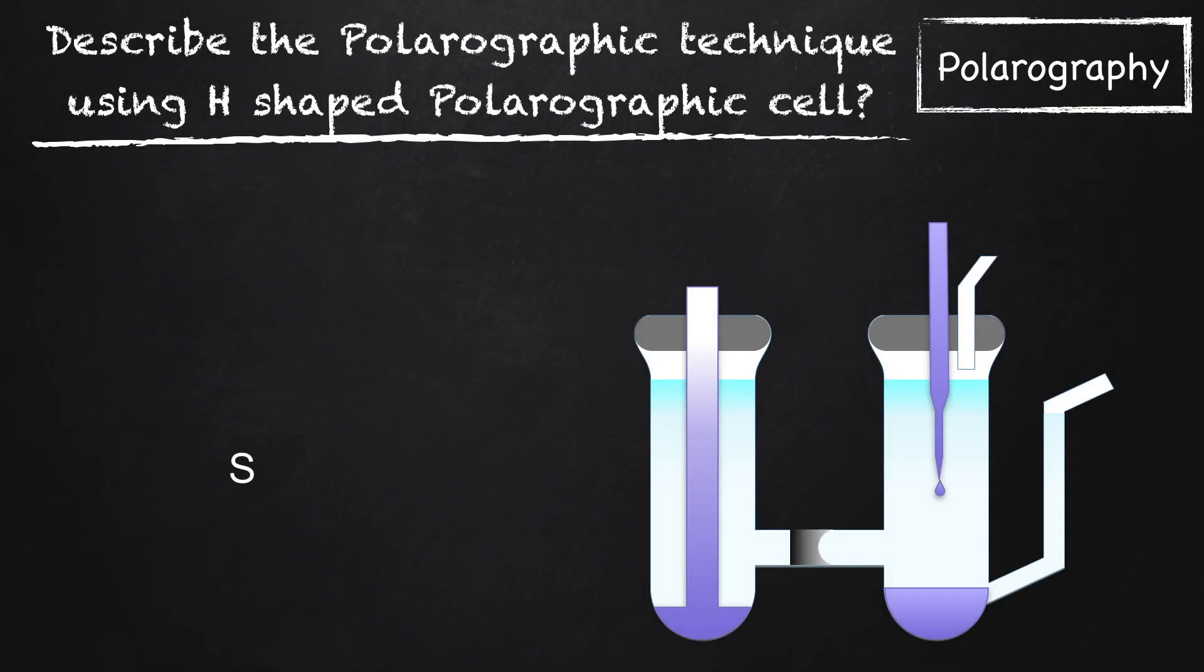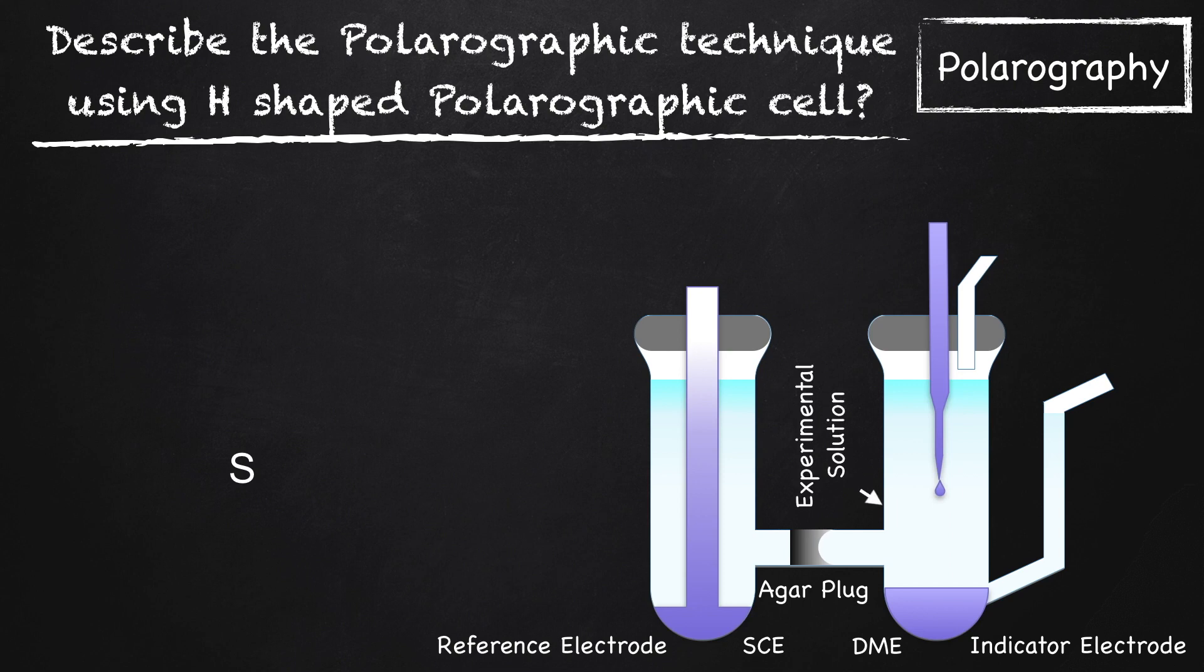The H-shaped polarographic cell consists of two electrodes in two parts. One is the indicator electrode or dropping mercury electrode where reduction takes place, and the other is a reference electrode like saturated calomel electrode. Both half cells are connected with an agar plug. The experimental solution is filled in the chamber of the dropping mercury electrode.